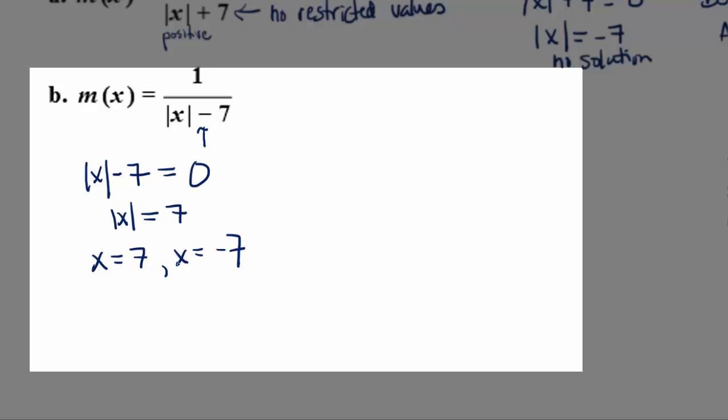So is the domain 7 and negative 7? No, these are the restricted values, the ones we're not allowed to plug in. So the domain is going to include everything but those values.